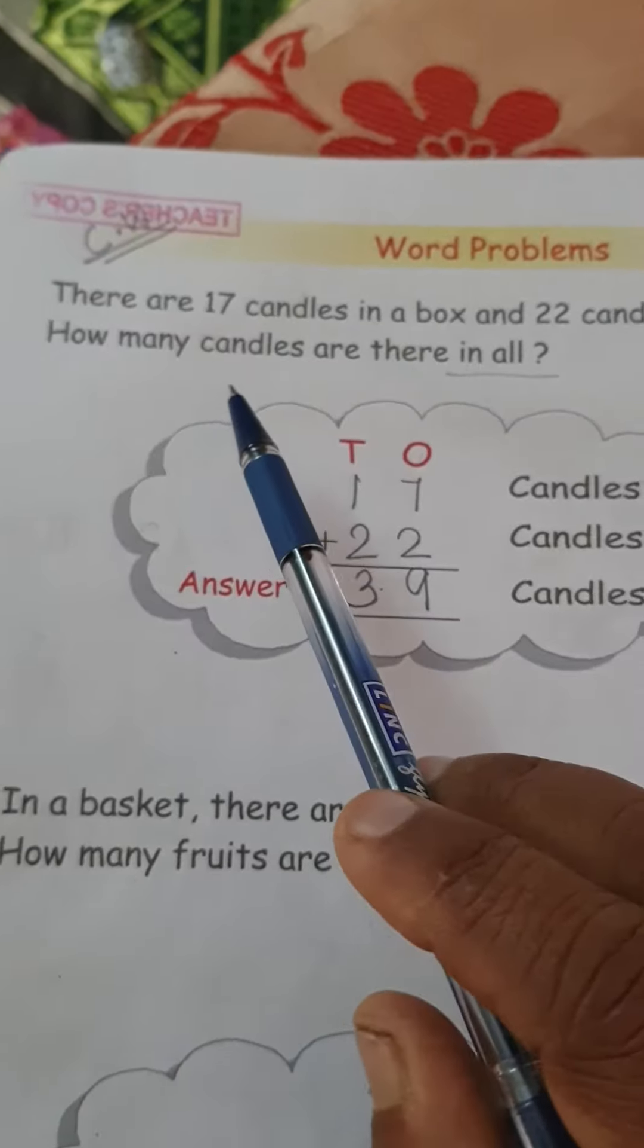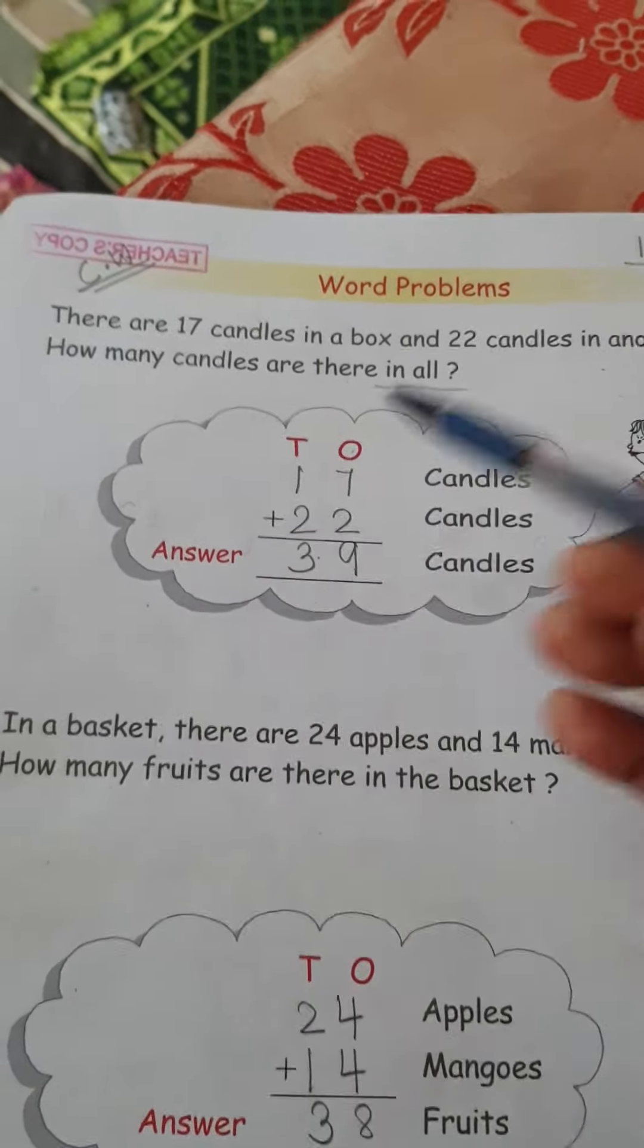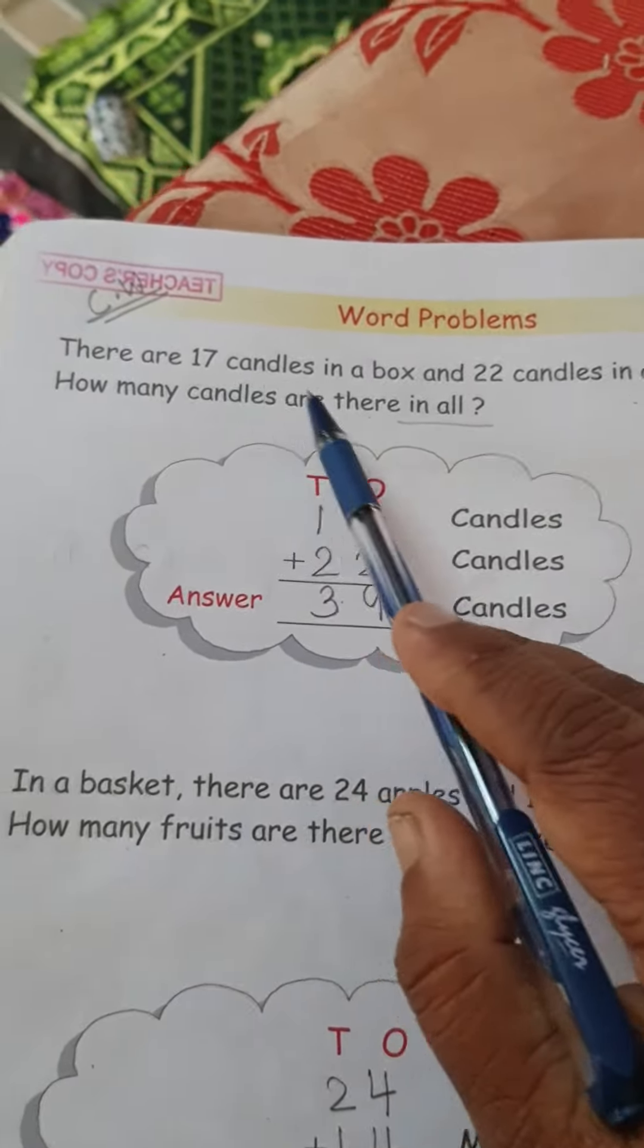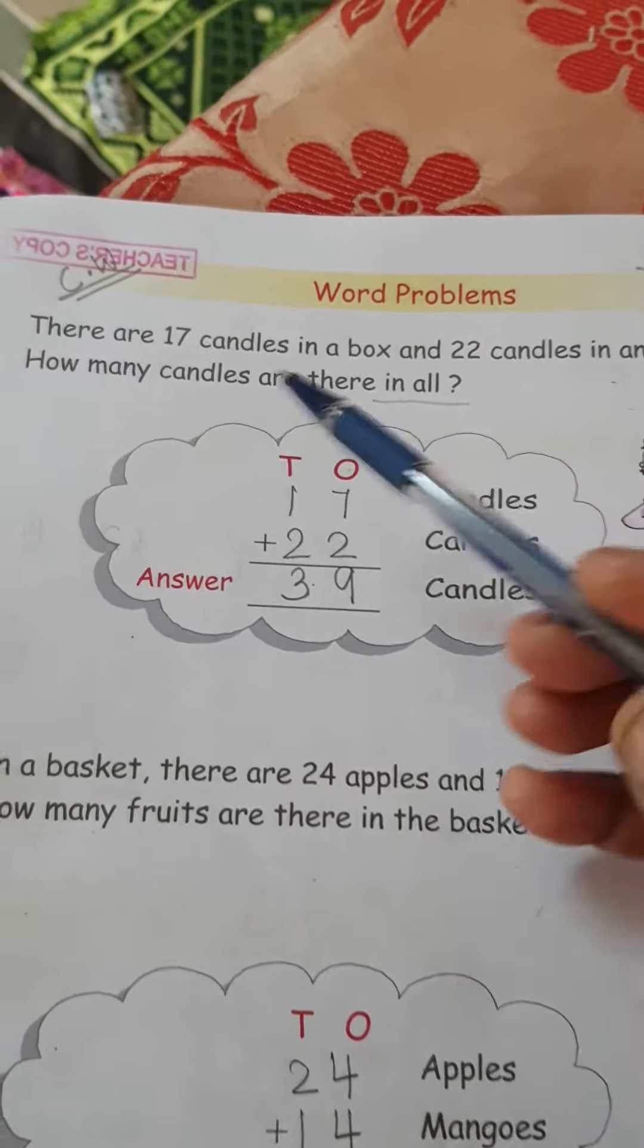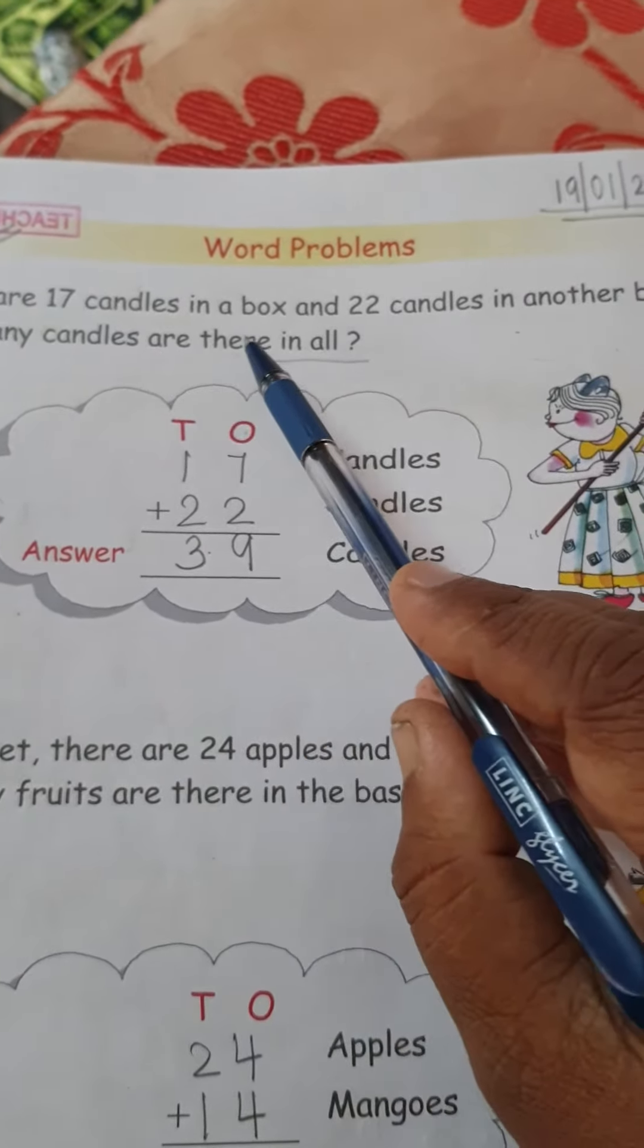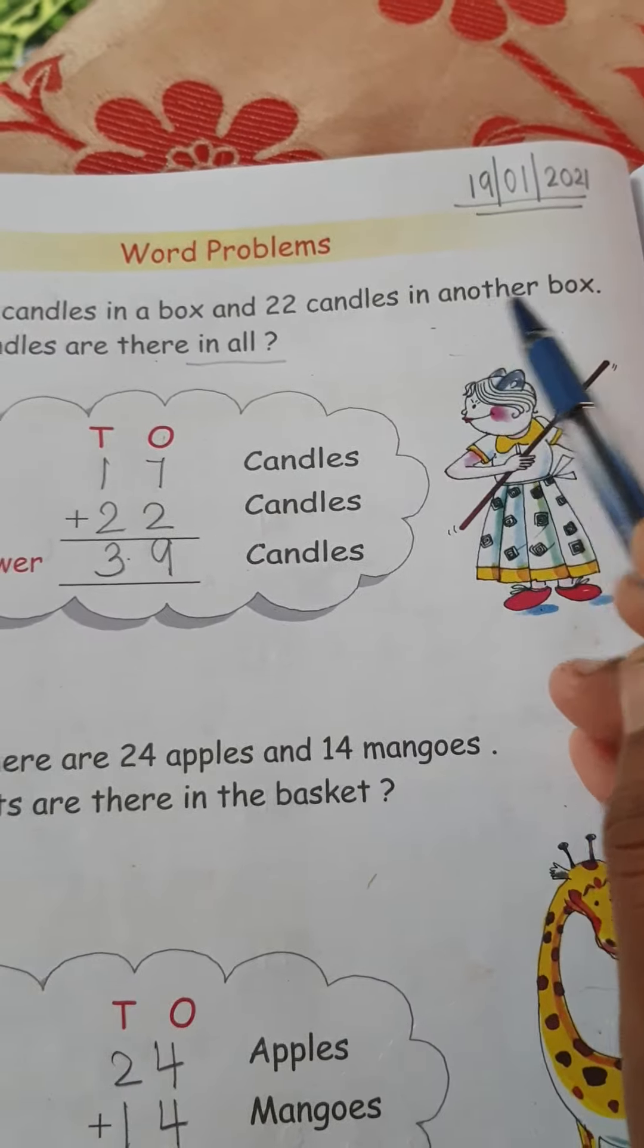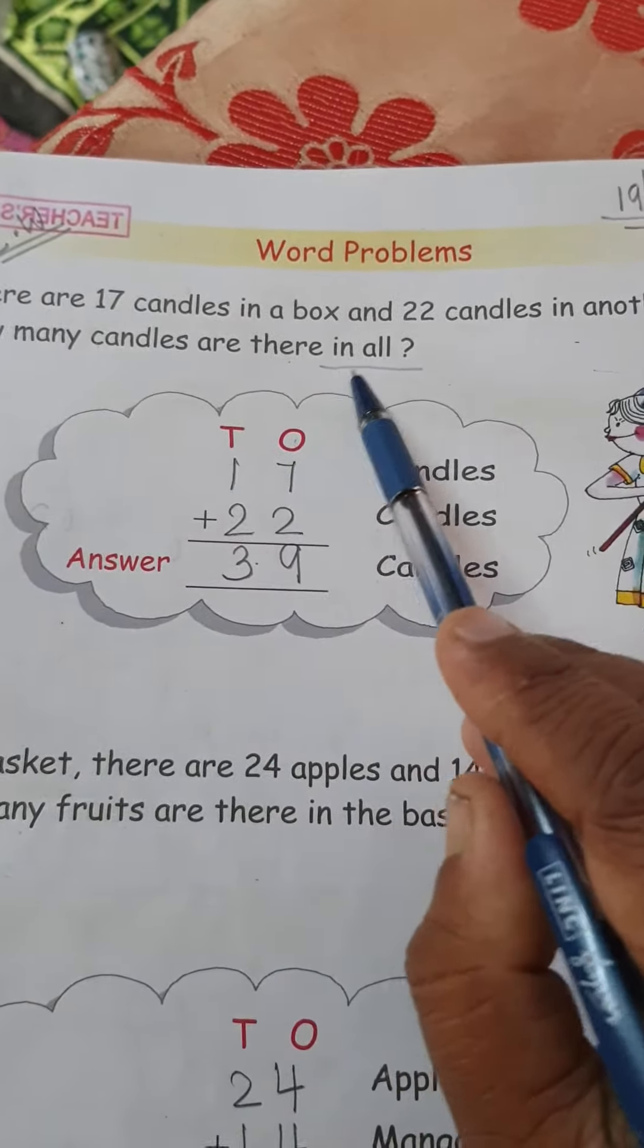So let's start and remember when you do the word problems. First, you have to read properly. What problems are given, what type of problems is this? First read properly. There are 17 candles in a box and 22 candles in another box. How many candles are there in all?